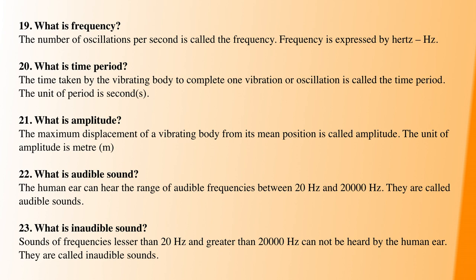Next, some term definitions. First: frequency — frequency is the number of oscillations per second, and its unit is hertz. Next: time period. Next: what is amplitude? Amplitude is the maximum displacement of a vibrating object from its mean position, and its unit is meters.